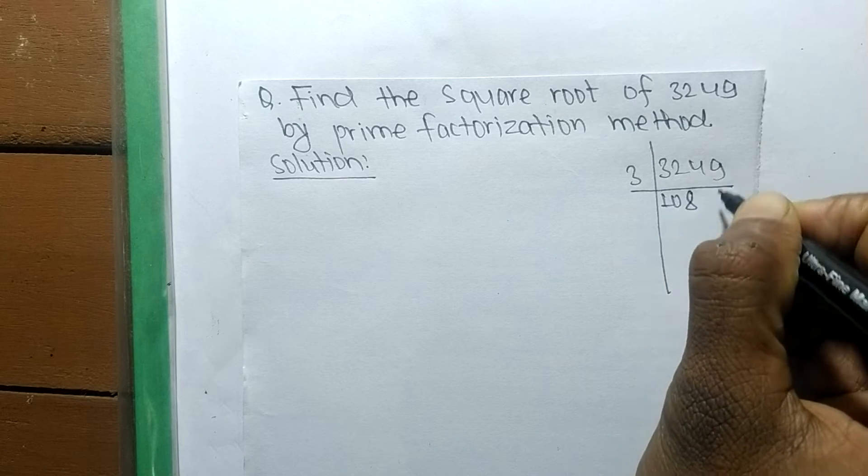It is 3249. Now we have to find its prime factors. So it is 3 times 10 means 30, remaining is 224. 24, 3 times 8 means 24, and 3 times 3 means 9. So it is again 3.